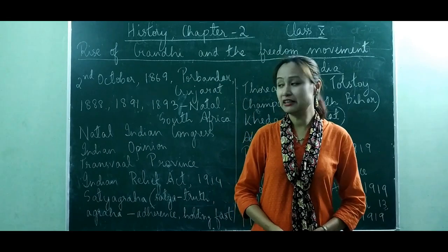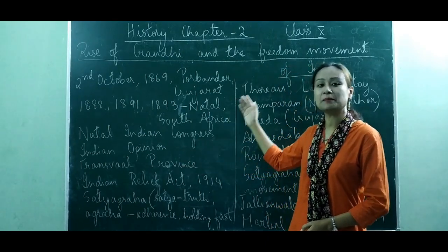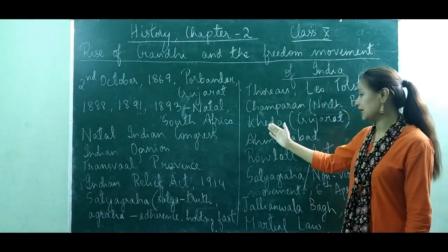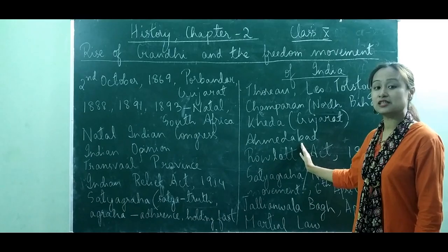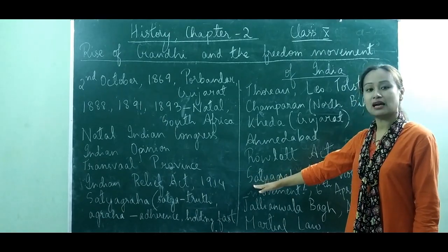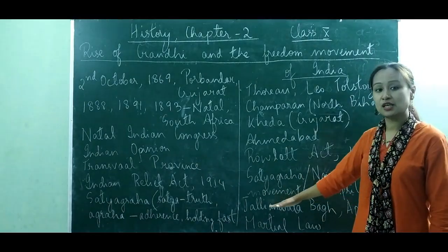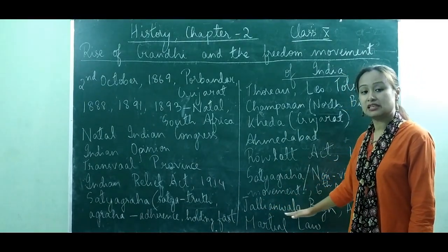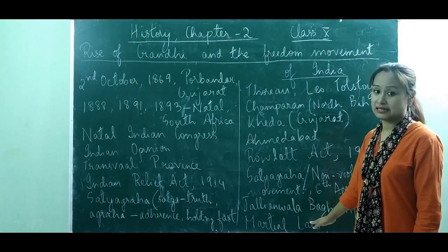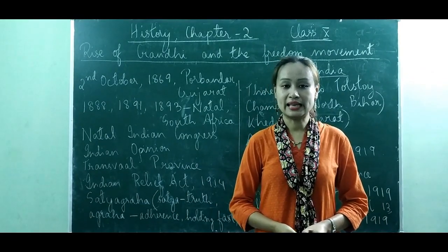From today's class, we have learned how Gandhiji played a great role in South Africa and also after returning back to India in 1915, how he took part in the local disputes in Champaran, Khera, and Ahmedabad. We also learned how the incidents of the First World War and the Rowlatt Act angered Gandhiji and compelled him to start the first movement at the national level — Satyagraha or non-violence — and how the Jallianwala Bagh Massacre took place and General Reginald Dyer applied Martial Law. In the next class, we will be learning about the Khilafat Movement and the Non-Cooperation Movement and further.